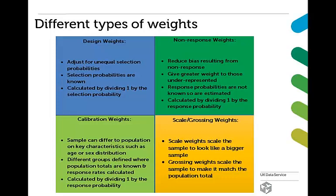Non-response weights are designed to give greater weight to those cases who are underrepresented in the data. Similarly to the design weights, the formula is one divided by the response probability. However, this probability isn't known, so it's estimated based on certain assumptions and the limited information known about those that don't respond from the sample frame. Non-response weights can help to reduce the bias in population estimates. However, it's important to remember that they are only estimates, and they're based partly on the assumption that within a particular group, those who respond are the same as those who do not. So if this assumption doesn't hold true, then our results may still be biased.